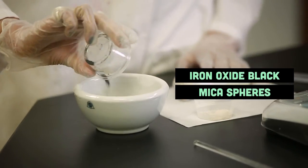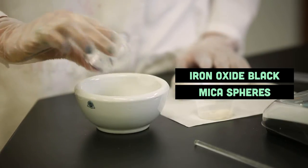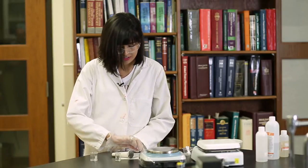I use iron oxide black to give the eyeliner a black color, and you want to put the color into the water phase.